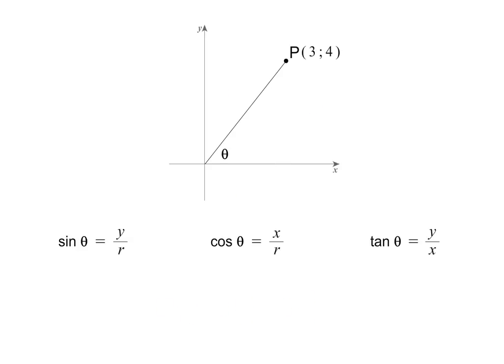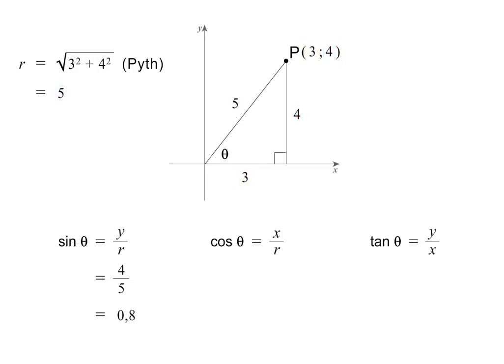Let's see how to use these ratios if they give us the point (3, 4). First, we complete a right-angled triangle by drawing a line perpendicular to the x-axis. The x-coordinate of P gives the length of the side on the x-axis, and the y-coordinate gives the length of the side parallel to the y-axis. To find the length of R, the hypotenuse, we use Pythagoras. The length of R is therefore 5. We are now ready to find the three trig ratios: sine theta equals 4 over 5, or 0.8; cos theta equals 3 over 5, or 0.6; and tan theta equals 4 over 3, or 1.3 correct to one decimal place. It is now time to test yourself. Good luck.